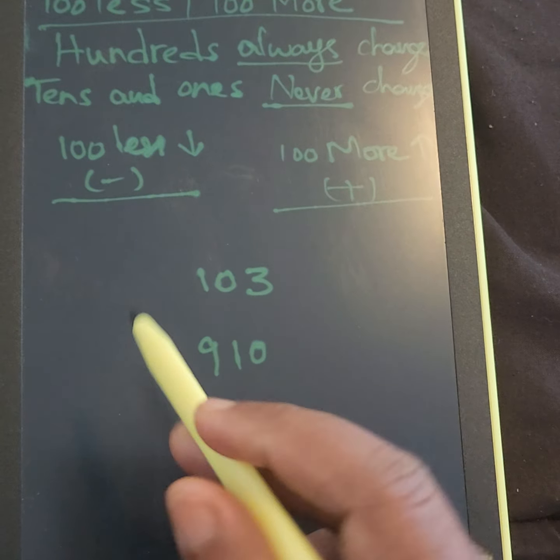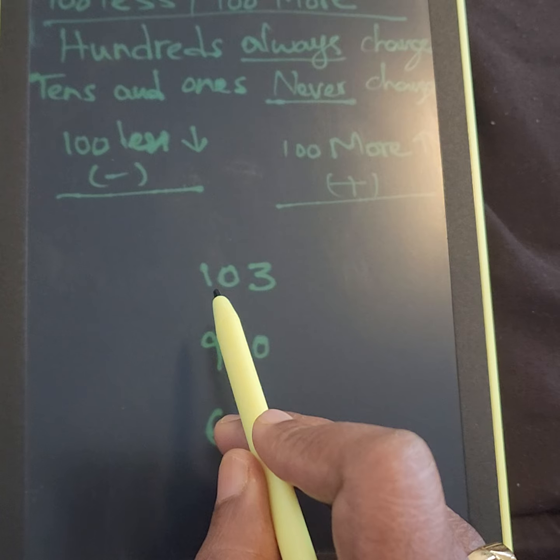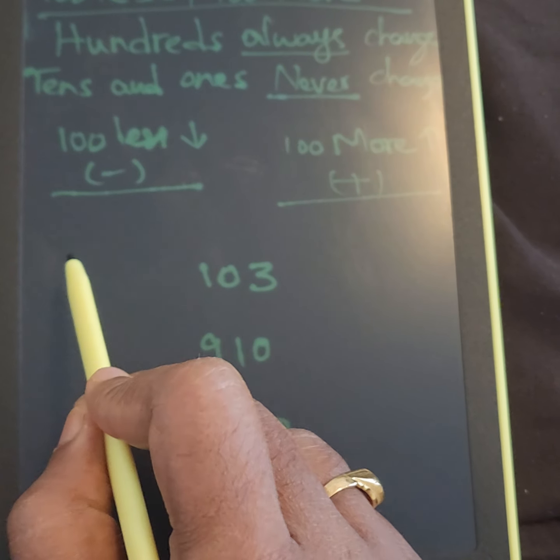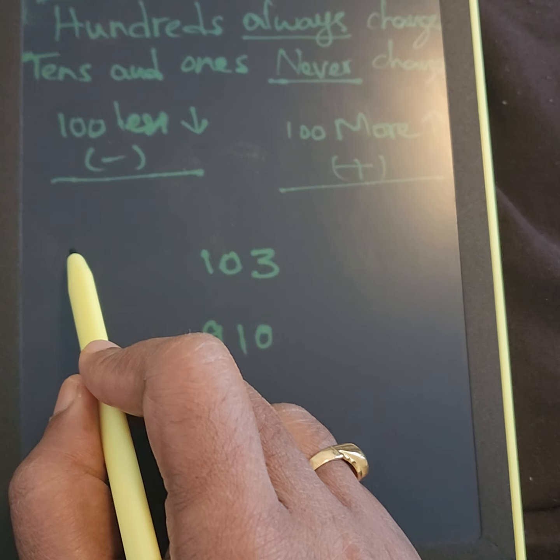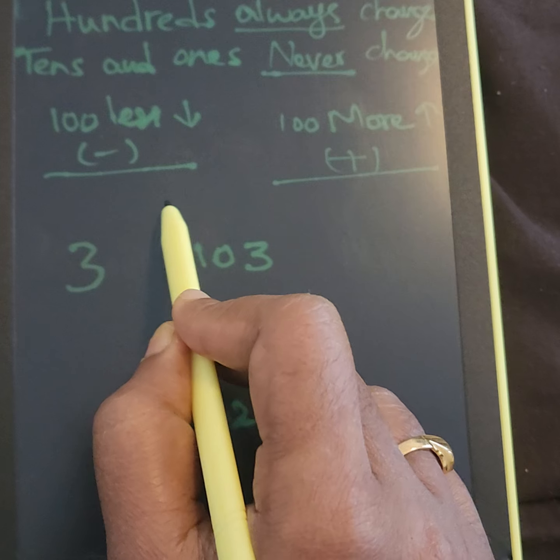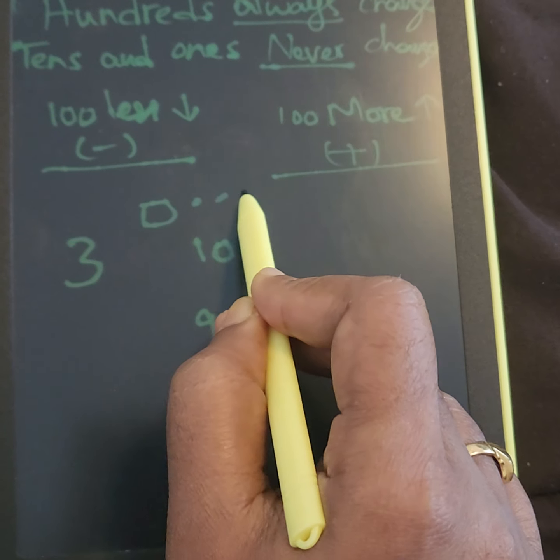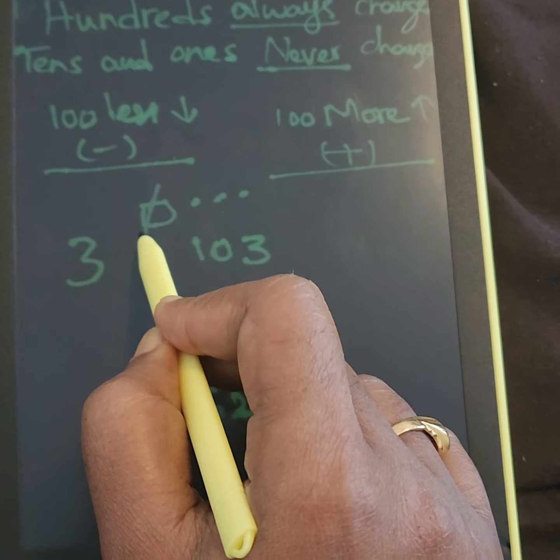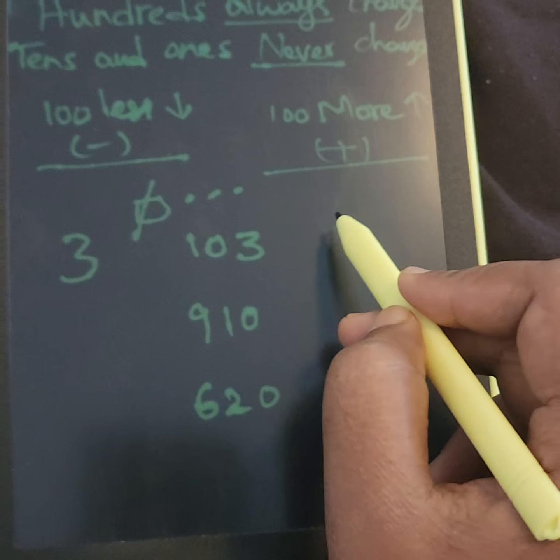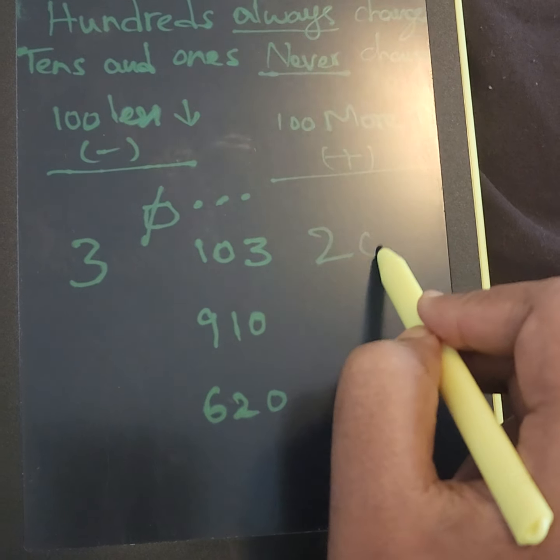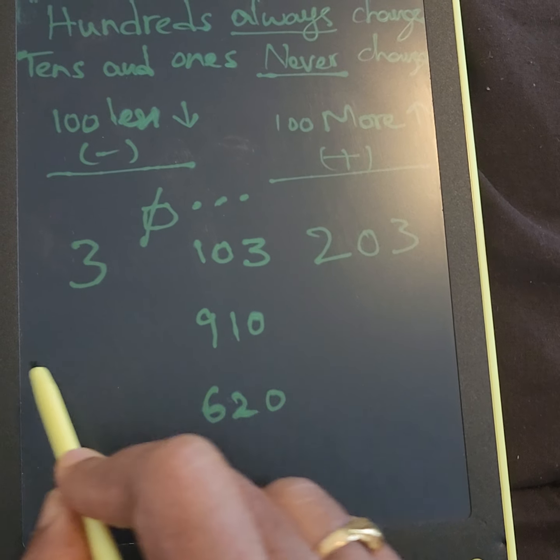So the first given number is 103, one hundred and three. So I have to take out a hundred. So after taking away hundred, we have only three left. So hundred less is 3, hundred more is 203.